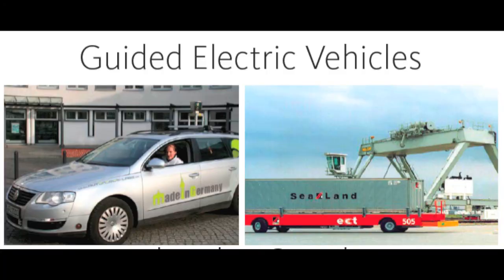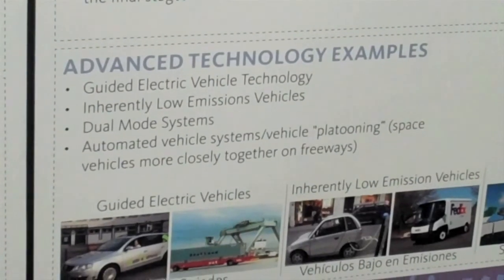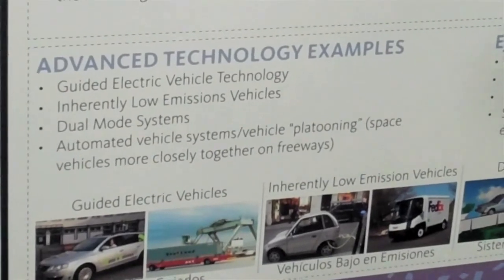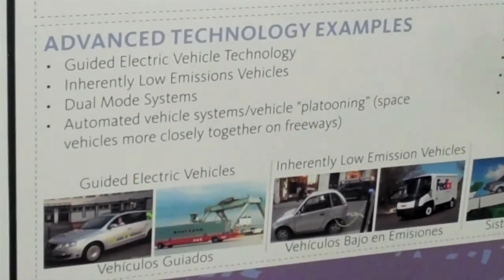Our alternatives look at advanced technology examples like guided electric vehicles or automated vehicle systems — a whole range of technologies intended to improve the efficiency of both the vehicles on the road and the transportation system.